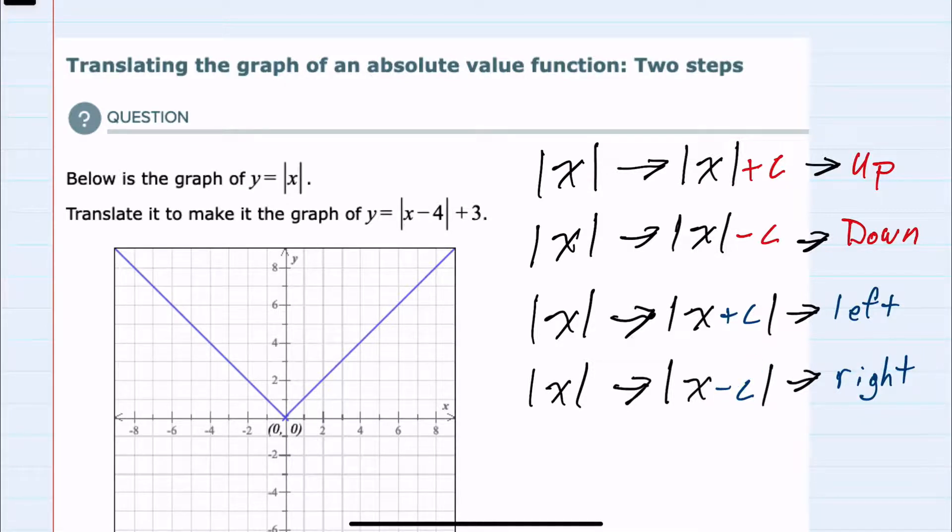So in this example, we have two shifts. First, plus three on the outside is going to shift up three units. So I'll take this vertex and shift it up three. However, we also have a minus four inside the absolute value, and we know that this is going to shift right four units.